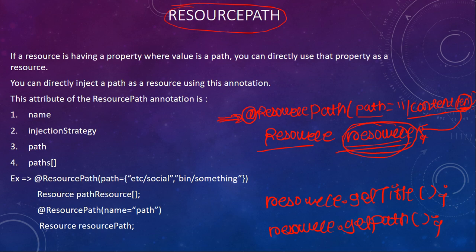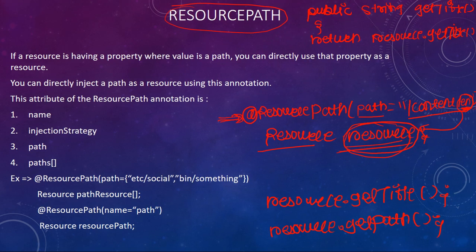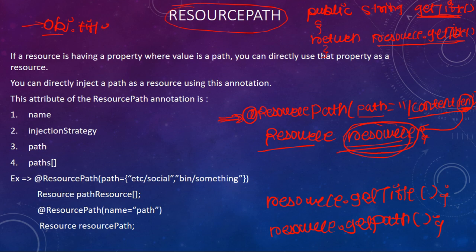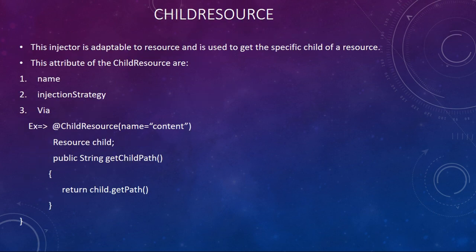Since Sling Models require getter methods, you create a public String getTitle() method that returns resource.getTitle(). To call this in HTL, you create an object using data-sly-use, remove 'get' from the method name, make the first letter lowercase, and reference it in your expression language. Similarly, @ChildResource can be used if you want child pages.